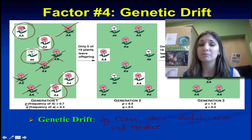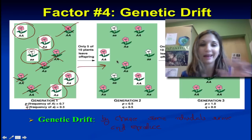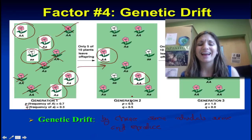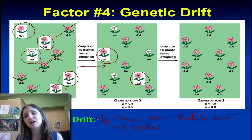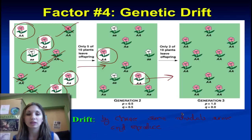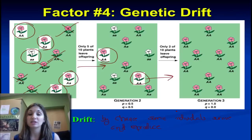What if more of those plants get stomped on, picked, or wiped out in a flood? Again, the ones that survive are surviving by pure chance. The alleles that get passed on from generation to generation are random. We've effectively weeded out the recessive allele from this population — not because the recessive was less fit, simply because the plants that survived being picked or surviving the storm or flood did not carry that recessive trait.